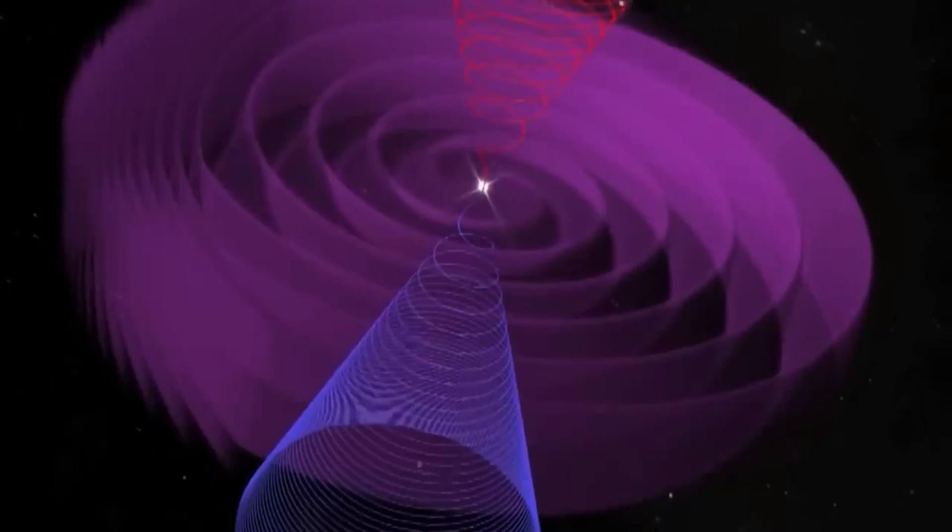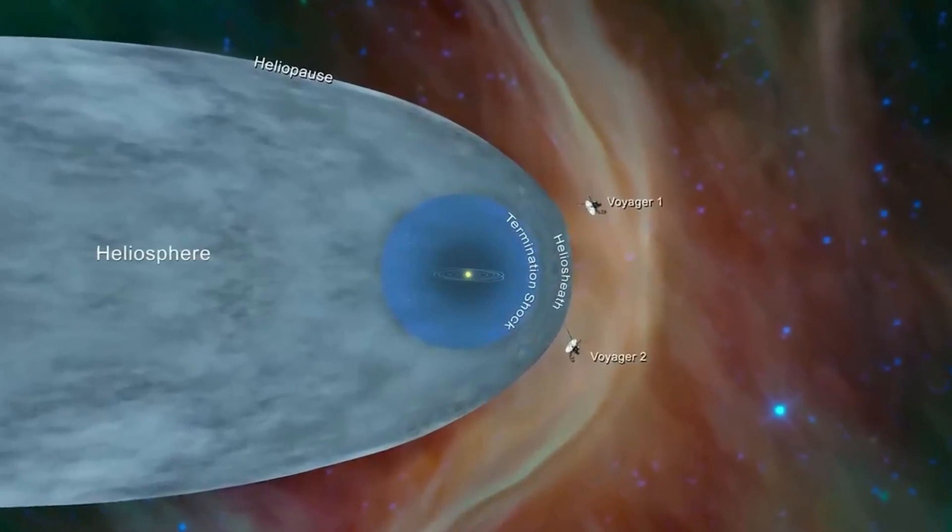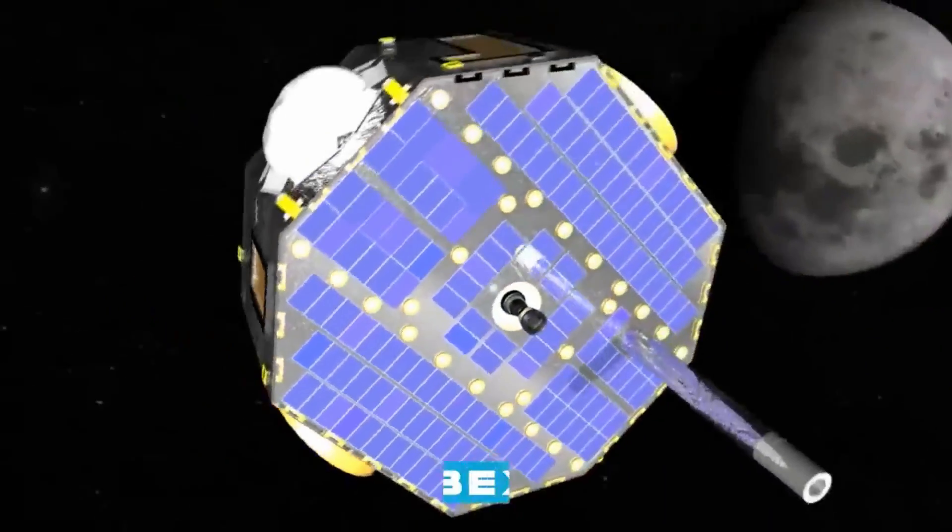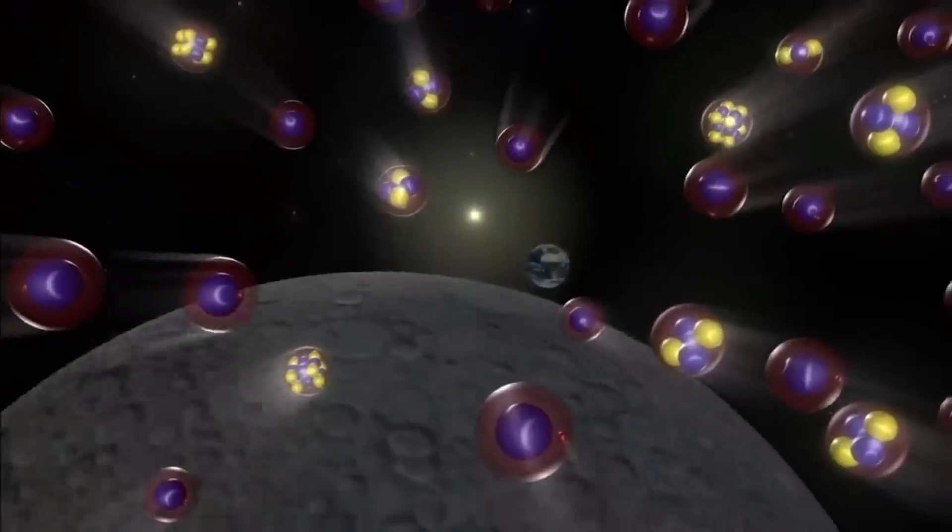Voyager 2, meanwhile, reached Jupiter in July 1979, and Saturn in August of 1981. Following its flyby of Saturn, Voyager 2 moved on to Uranus and Neptune, making the closest approaches to each planet in January of 1986 and August of 1989, respectively.